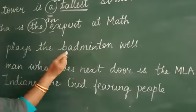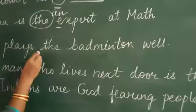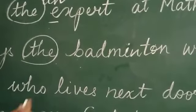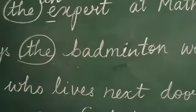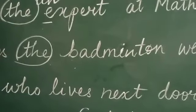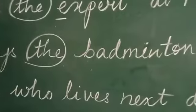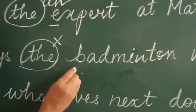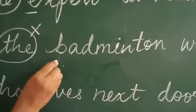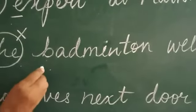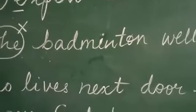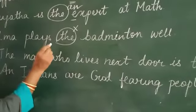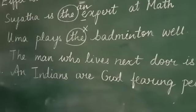See the third one: 'Uma plays the back mental well.' Here 'the' is the article used. Can we use 'the' before 'back mental'? Or will we use 'a' because 'b' is a consonant? No — we are not going to use any article. Why? Because we don't use articles before the names of sports. It might be tennis, it might be chess — we are not going to use any article before the name of a sport. So you just say: 'Uma plays back mental well.'